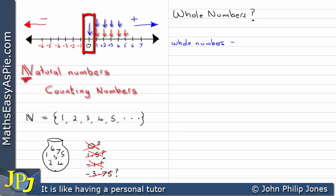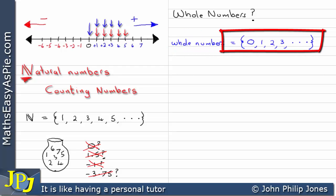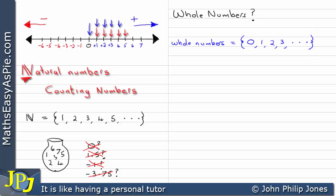If we look at the set of whole numbers, we open the braces and inside we put a zero, then one, two, three — and those three dots tell us we carry on writing this down forever — then we close the braces. So whole numbers contain the zero. The invention of zero was a major leap forward in mathematics, and an important one that we will be discussing in due course.